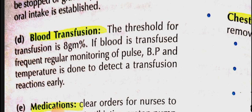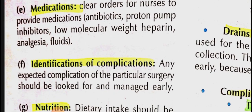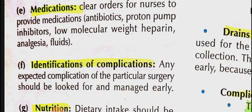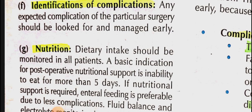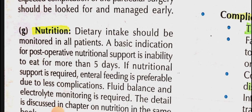Medications: record all medications the patient is receiving — antibiotics, proton pump inhibitors, low molecular weight heparin, analgesia, and IV fluids — and inform the nurses about doses. Identify and manage any complications arising in the ward after surgery. Also pay attention to early nutrition and the patient's dietary intake.